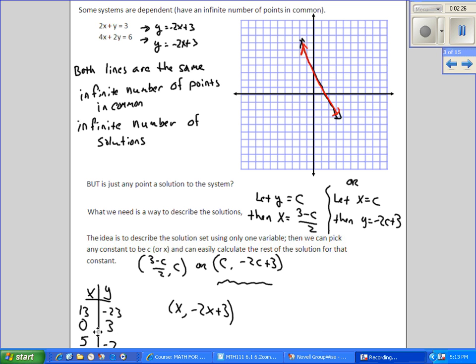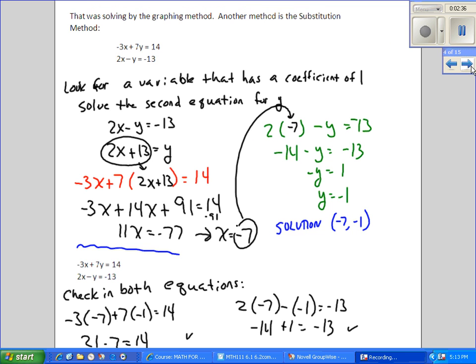Let x be 0, then y is 3. Let x be 5, y is negative 7. And so this could be our solution set. The book's going to write it this way. If you use this notation, that's fine with me.